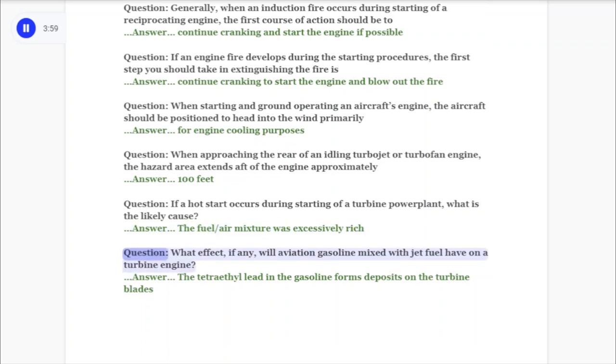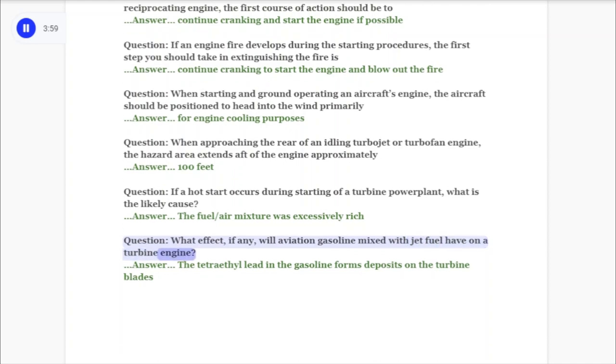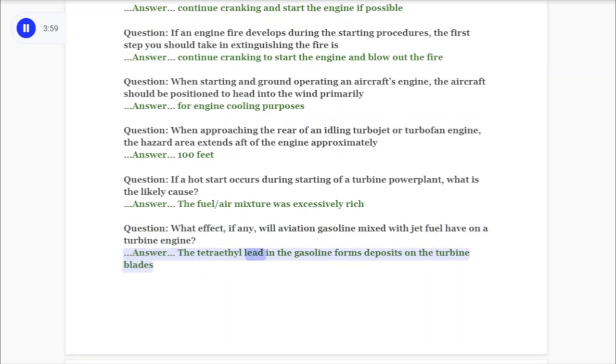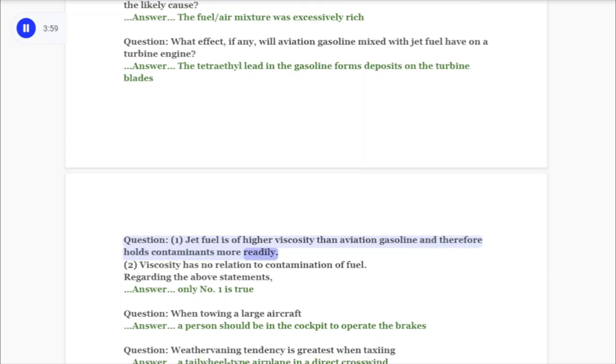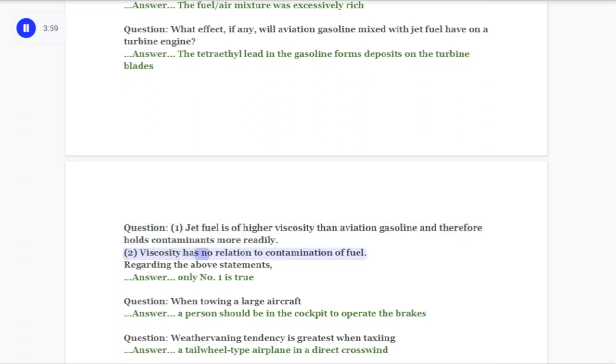Question: What effect, if any, will aviation gasoline mixed with jet fuel have on a turbine engine? Answer: The tetraethyl lead in the gasoline forms deposits on the turbine blades. Question: One: Jet fuel is of higher viscosity than aviation gasoline and therefore holds contaminants more readily. Two: Viscosity has no relation to contamination of fuel. Regarding the above statements? Answer: Only number one is true.